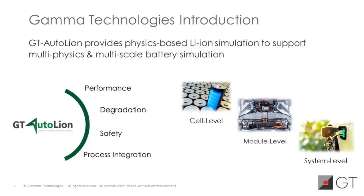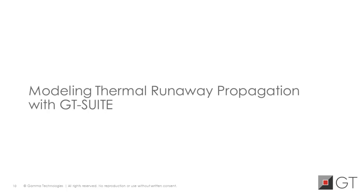Next, I would like to introduce our battery modeling tool, GT Autolion. GT Autolion is a widely used and powerful tool designed to provide realistic and physics-based battery models well before the batteries are available to test. Using this tool, we can perform in-depth evaluations and optimizations of cell performance, degradation, and safety for various lithium-ion battery chemistries and designs at the cell level, module level, and system level.